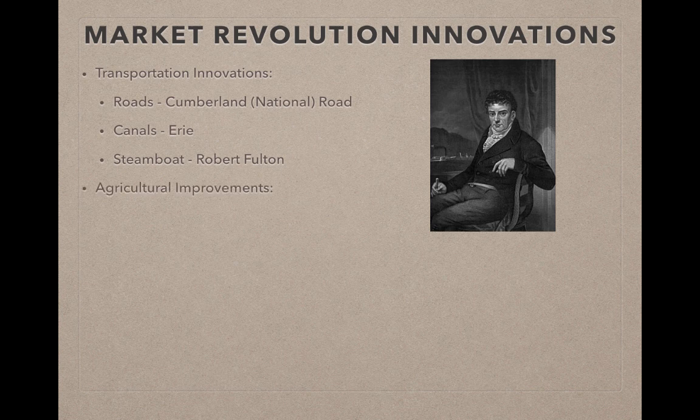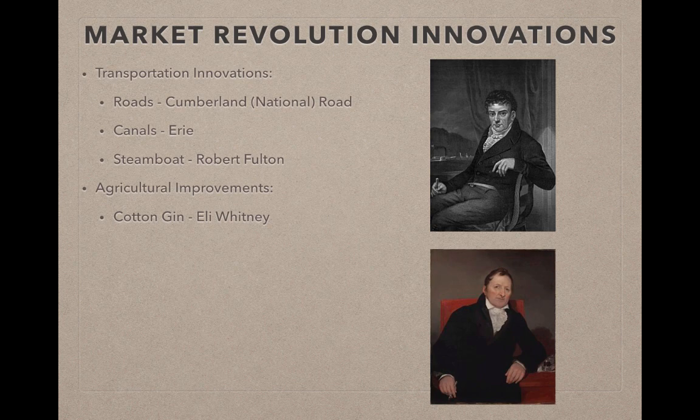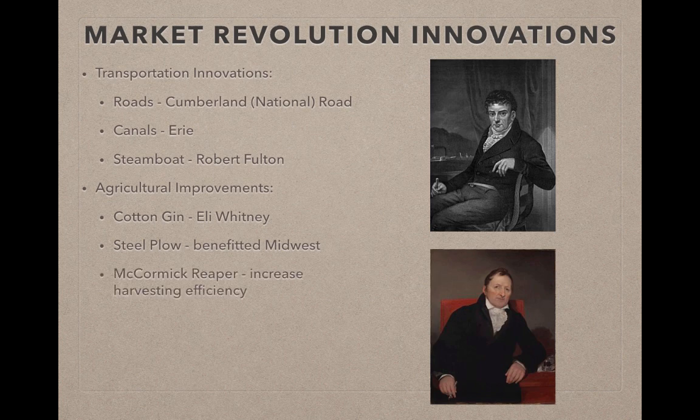For agricultural improvements, we have the cotton gin invented by Eli Whitney. The goal of this was to separate cotton at a much faster rate from its seeds. He actually envisioned that this would decrease the need for slavery, but unfortunately it made slavery that much more significant in the South. The steel plow benefits the Midwest, where farmers could break the soil and grow more food. And the McCormick Reaper increased harvesting efficiency, getting crops out of the ground at a faster rate.